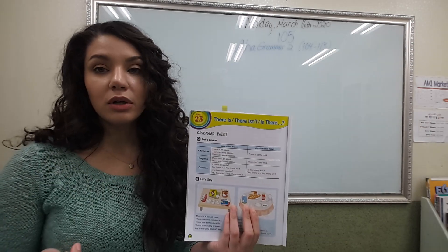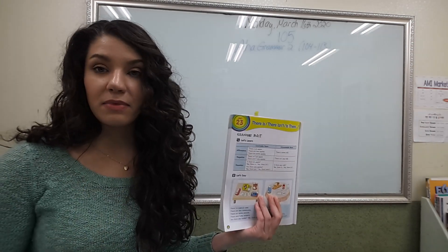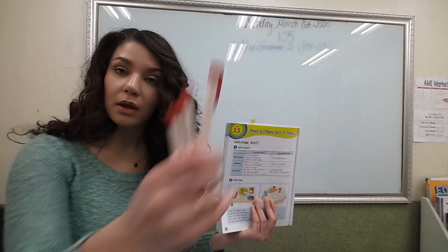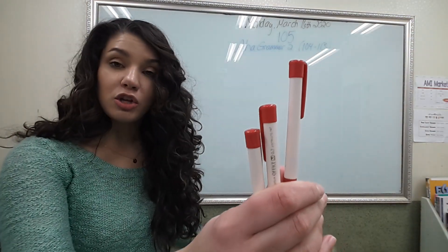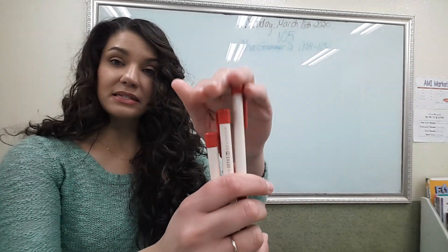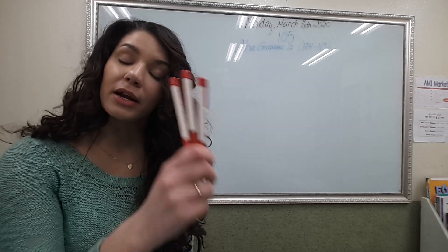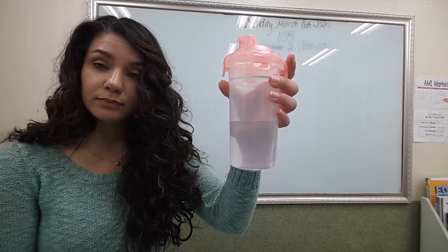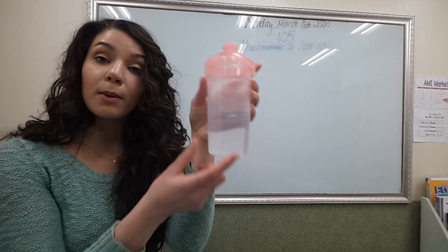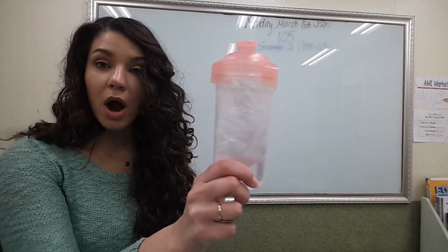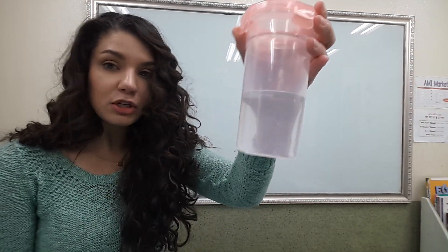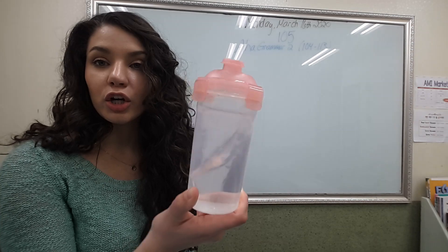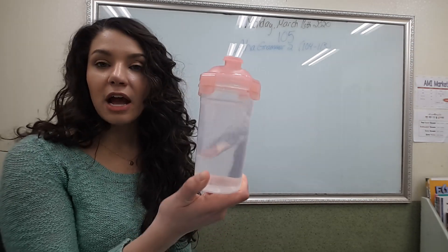Something is countable if we can count how many of something there are. For example, if you have pens, you can count one, two, three — there are three pens, so the noun 'pens' is countable. What about the noun 'water'? Can you count how many water? No — you can count how many water bottles; the bottle is countable. But 'how many water' — you can't count that, so this is non-countable.